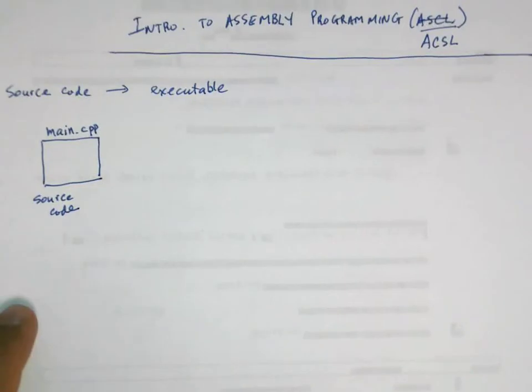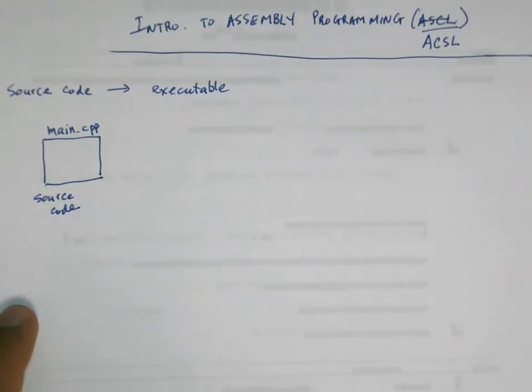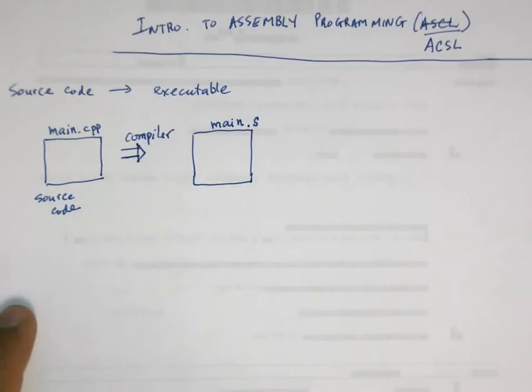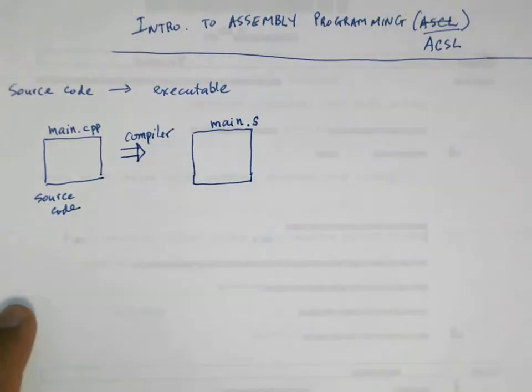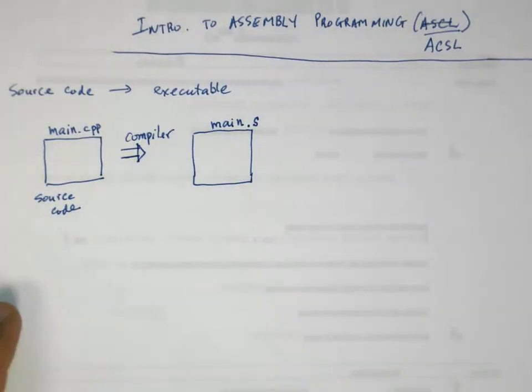First is a file—I'm going to call this main.cpp. I'm using C and C++ as my example here, although we could use a number of languages. What comes after that is the compiler. The compiler's job is to make sure all of the syntax is correct and it converts it into something called a .s file, which is assembly code.